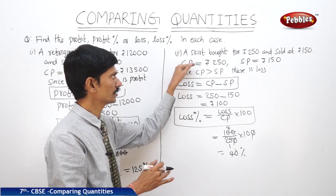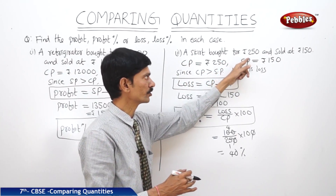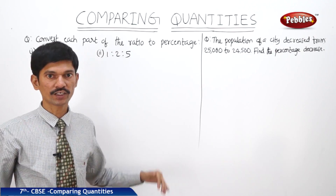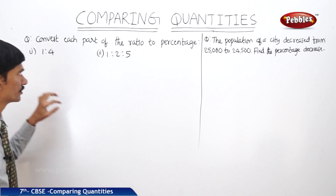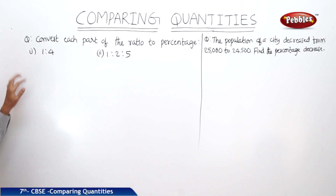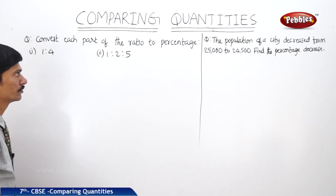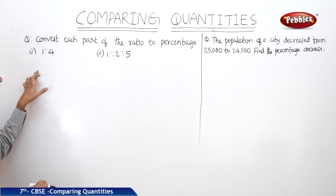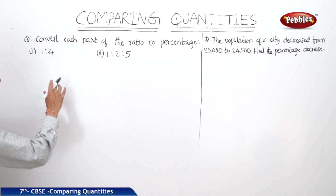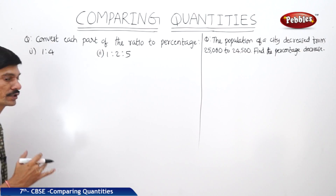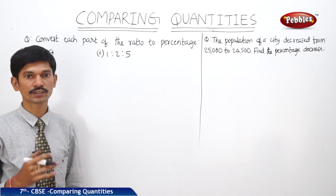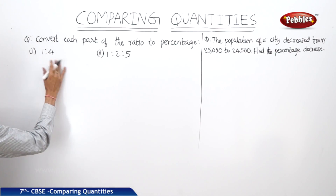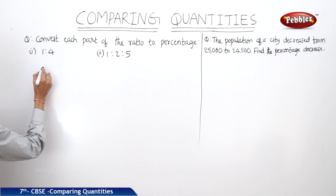So when the skirt is bought for 250 rupees and sold for 150 rupees, there is a 40% loss. Now let us see the next question: convert each part of the ratio to percentage. In the given question two ratios are given, and we should convert each ratio to percentage. Let us take the first ratio, that is 1 is to 4.